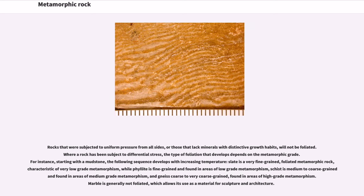Where a rock has been subject to differential stress, the type of foliation that develops depends on the metamorphic grade. For instance, starting with a mudstone, the following sequence develops with increasing temperature: slate is a very fine-grained, foliated metamorphic rock characteristic of very low-grade metamorphism; phyllite is fine-grained and found in areas of low-grade metamorphism; schist is medium to coarse-grained and found in areas of medium-grade metamorphism; and gneiss is coarse to very coarse-grained, found in areas of high-grade metamorphism.